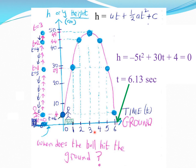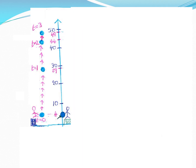This concludes the discussion for the vertical throw. The ball hits the ground at 6.13 seconds.